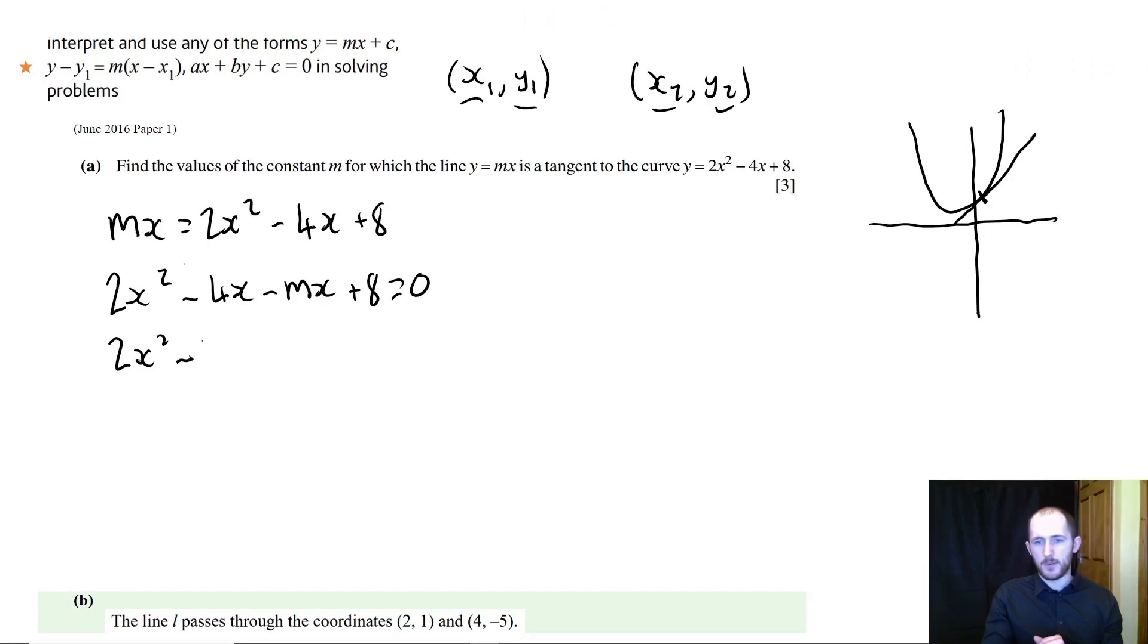So what I'm going to do is I'm going to factorise out a minus, and I'm going to make this 2x squared minus 4 plus mx times x plus 8 equals 0. So essentially the thing in front of here, you could also have it as plus, and then make this minus and also this minus, which will give you the same thing. It doesn't really make a difference.